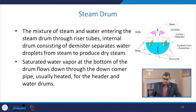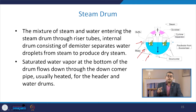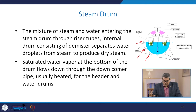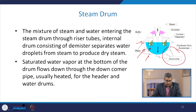The integral parts of steam drums include: the mixture of steam and water entering the steam drum through the riser tubes; an internal drum consisting of a demister, which separates water droplets from the steam to produce dry steam; and saturated water vapours at the bottom of the drum flowing down through the downcomer, which is usually connected to the header and water drums.